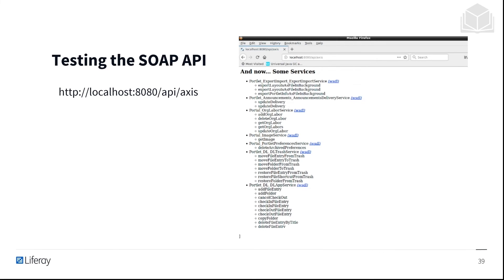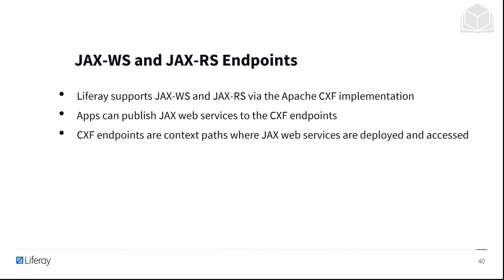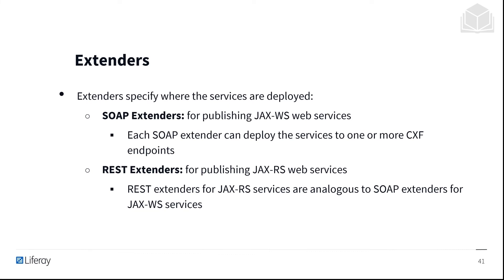We can test the SOAP API by visiting localhost 8080 slash api slash axis. Liferay DXP supports publishing JAX-WS and JAX-RS services via the Apache CXF implementation. Apps can publish JAX-WS and JAX-RS services to the CXF endpoints. Publishing JAX-WS and JAX-RS services requires defining an endpoint and an extender. CXF endpoints are context paths that the JAX-WS services are deployed to and accessible from. Extenders specify where the services are deployed — SOAP extenders are used for publishing JAX-WS web services, and each SOAP extender can deploy the services to one or more CXF endpoints. For publishing JAX-RS web services, we use REST extenders.